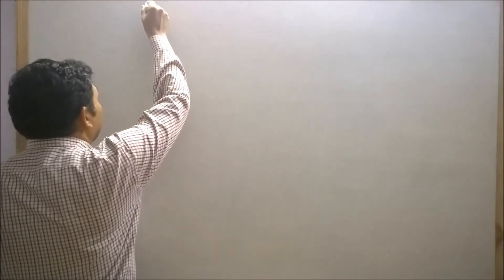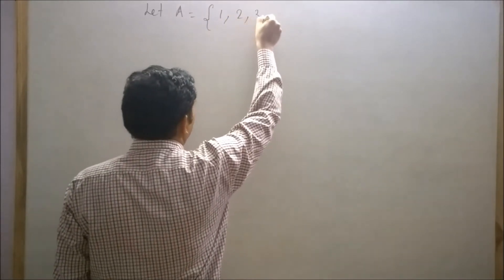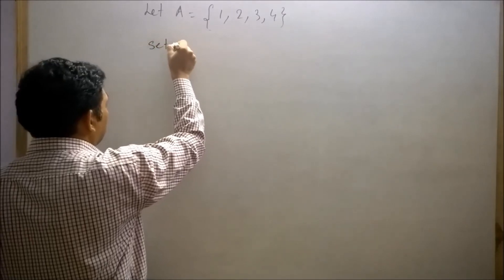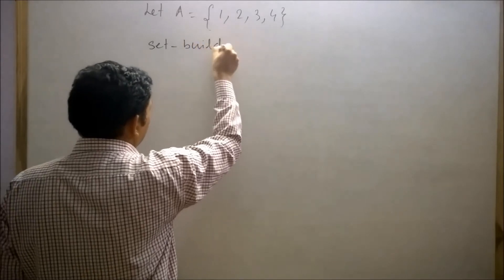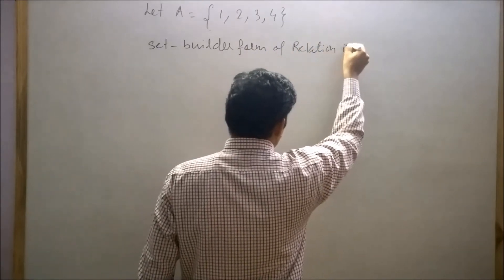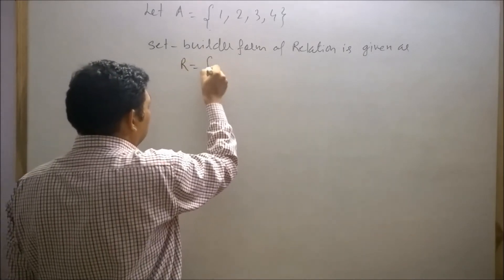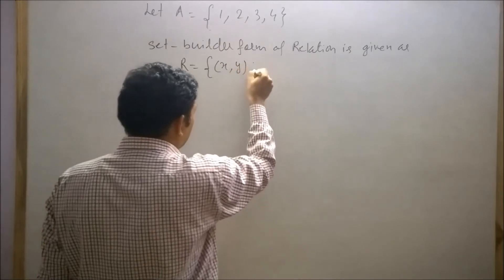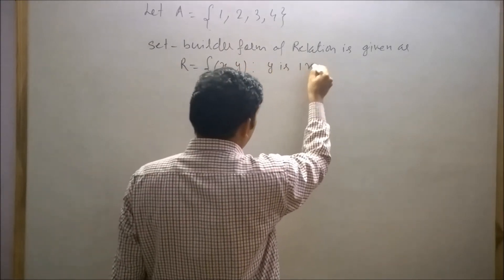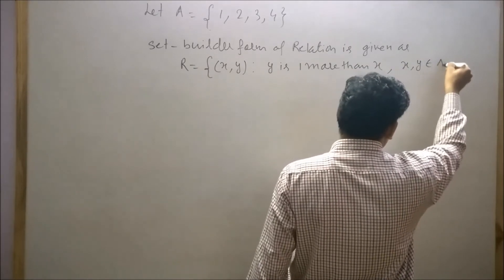Students, in class 11, we have represented relations in set builder form and roster form. For example, let set A contain the first 4 natural numbers. The set builder form of relation is given as R equals (x, y) such that y is 1 more than x, where x and y belong to set A.